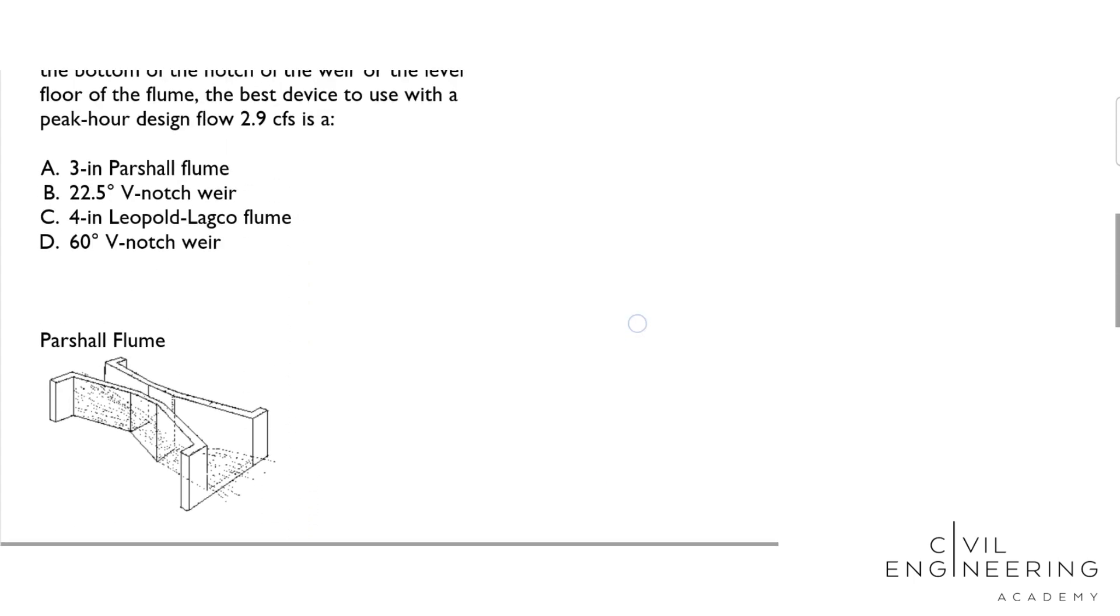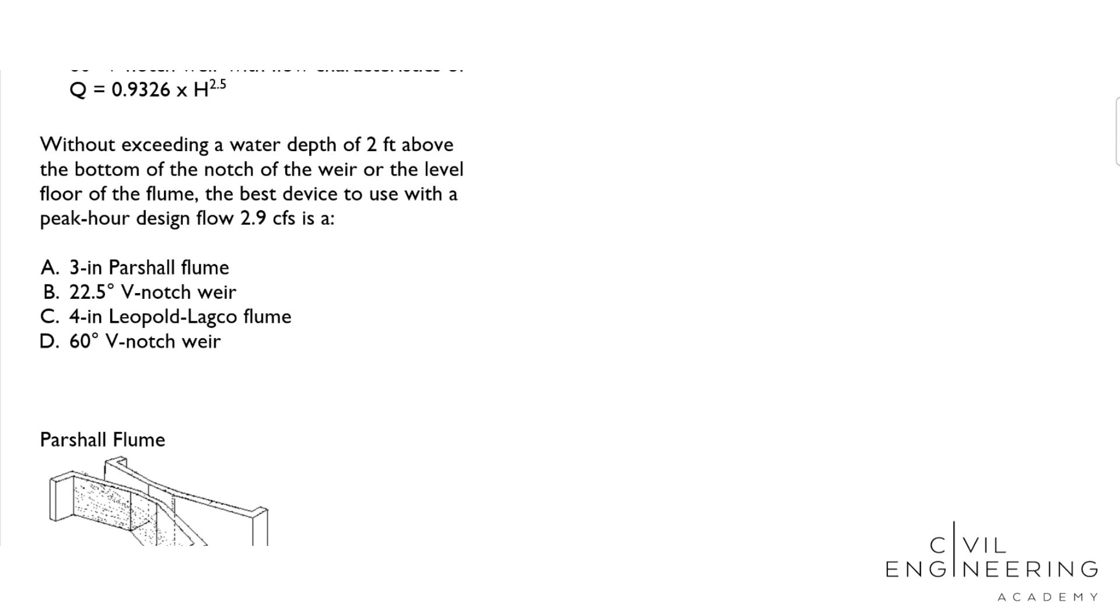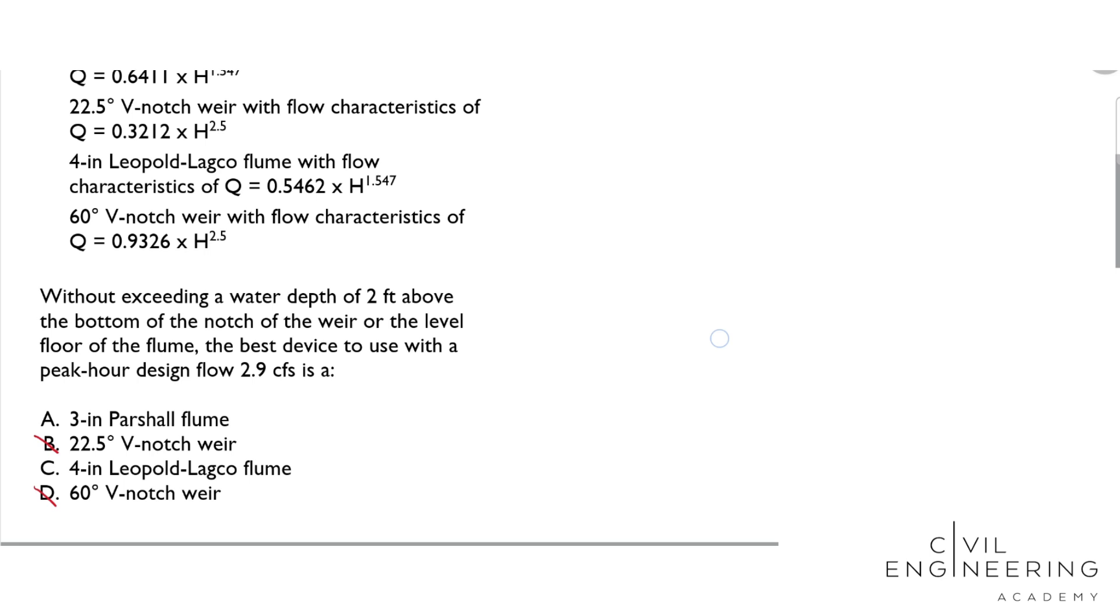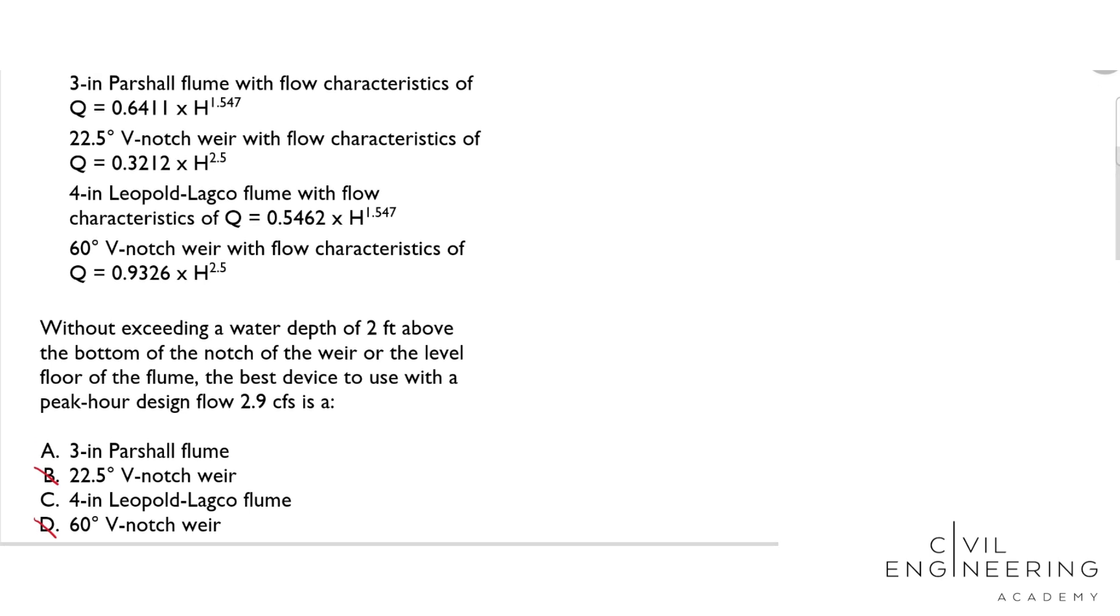Based on that knowledge, we can immediately eliminate B and D for the V-notch weirs, and we really only need to solve the equations for the Lagco flume and the Parshall flume.